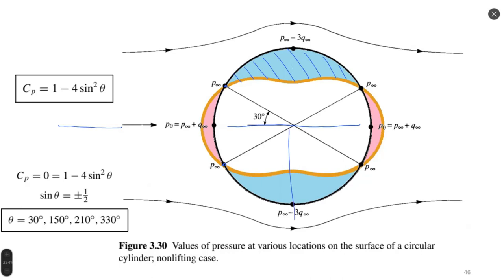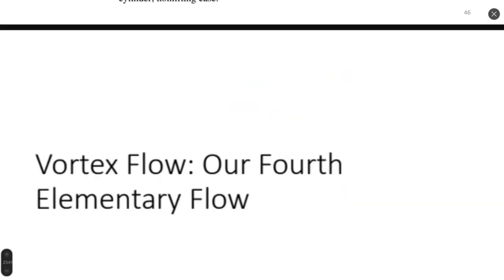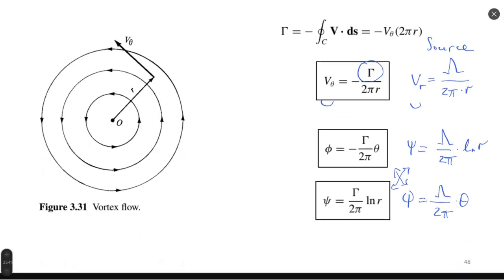Analyzing the vertical plane, we also see symmetry, meaning the front part forces are the same as the back part forces, giving us no drag. It is enough to analyze the flow pattern, which is proportional to the pressure distribution on the surface according to Bernoulli's equation.